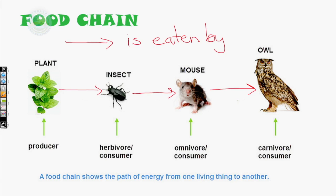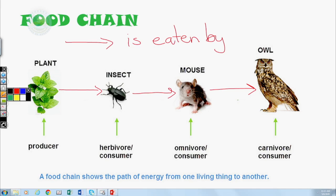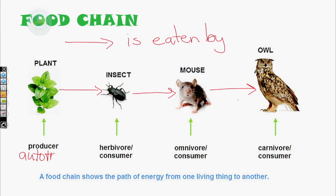A food chain always starts with a producer. Producers are also known as autotrophs — these are the plants and organisms that make their own food, so they always start your food chain. Everything else beyond the producers would be consumers. The first or primary level would be your herbivores, which eat only plants — sheep, goats, cows, etc. are your primary consumers.